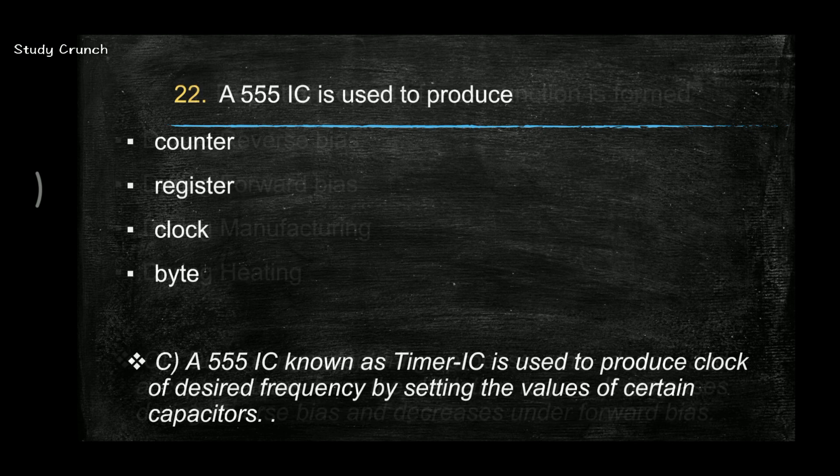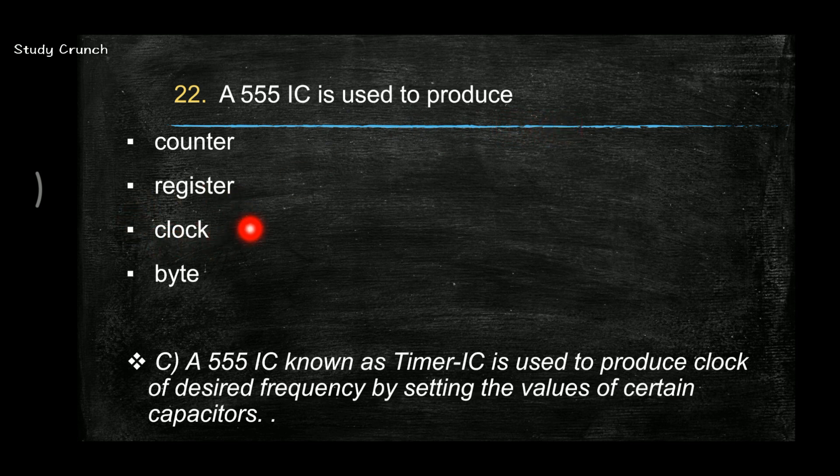Next, a 555 IC is used to produce clock. For a desired frequency, by setting the value of a certain capacitor, we can produce the clock of 555 IC.